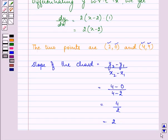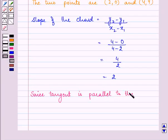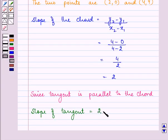Now since the tangent is parallel to the chord, the slope of the tangent will be equal to the slope of the chord, that is 2.